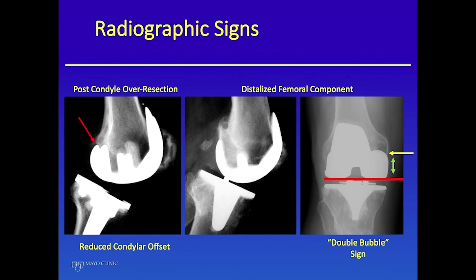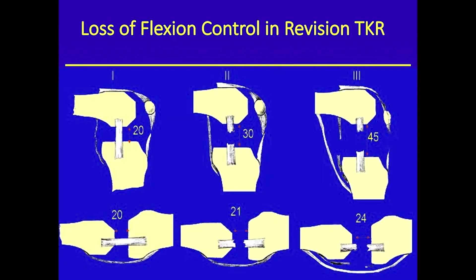It's very common that when you aspirate the knee, there is blood in the aspiration. Radiographically, there are many signs: you can see under-resection of the posterior condyle, small implants, and the distalized implant — what we call the double bubble sign. When you measure from the epicondyle down to that surface, it was 38 millimeters when it should only be 22. They simply didn't resurface enough of the distal femur.